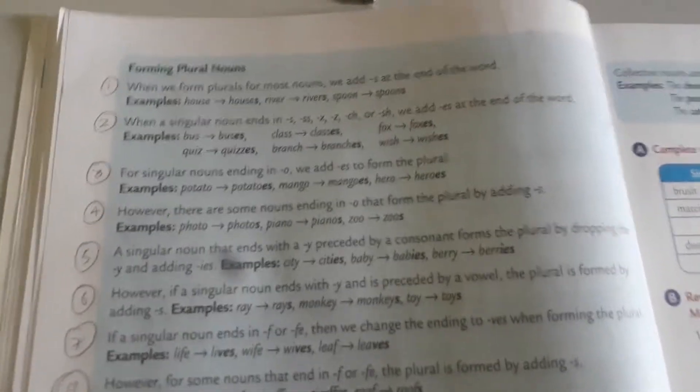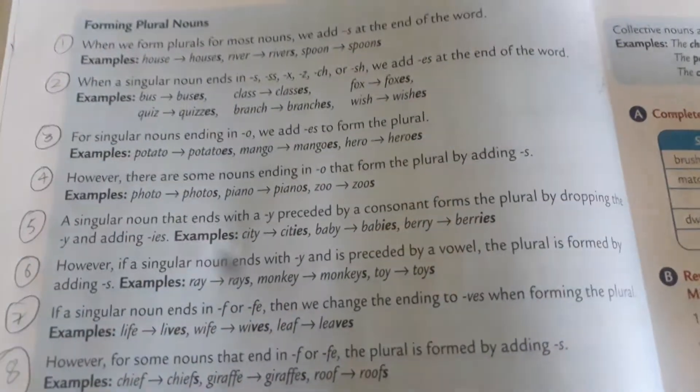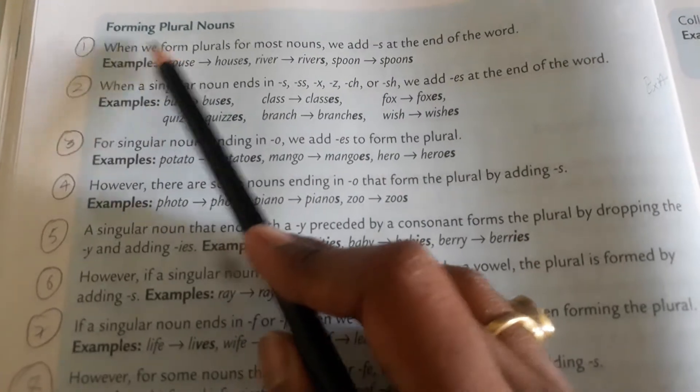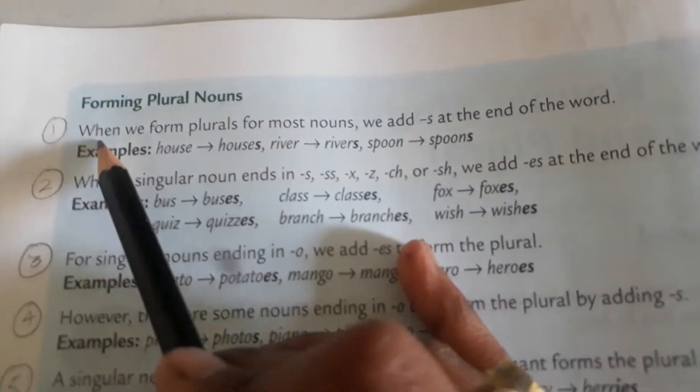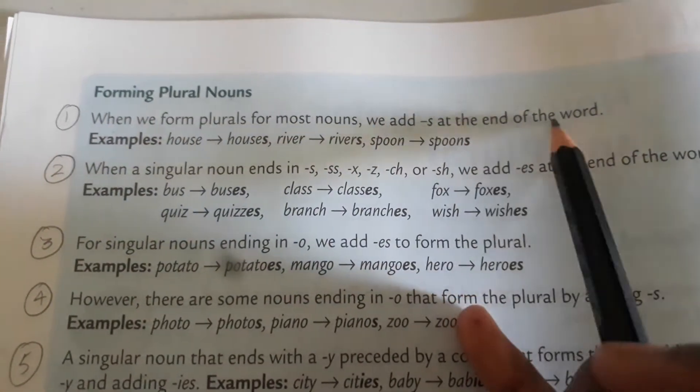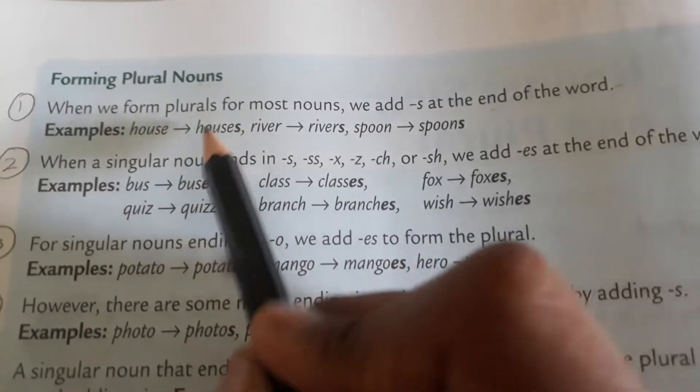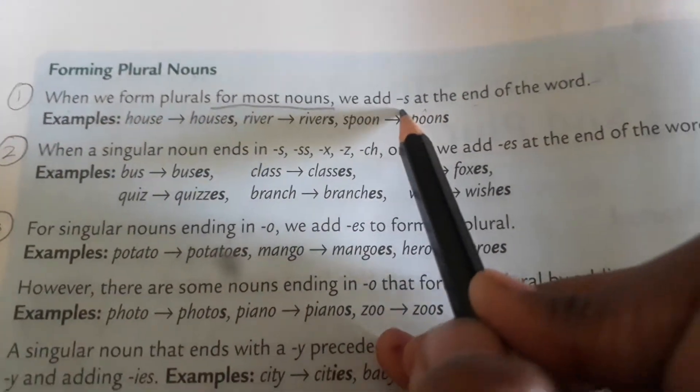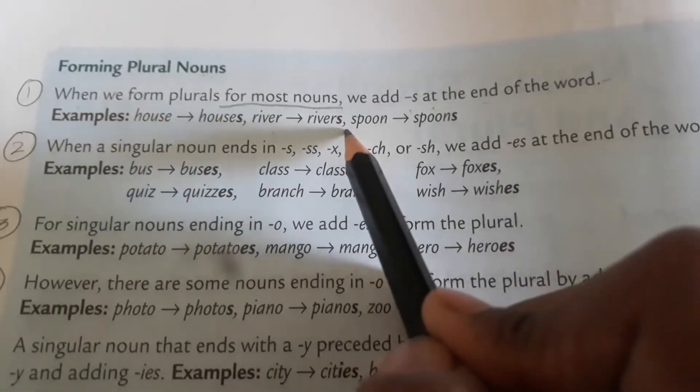Now come to page number 20. Look over here very carefully. When we form plurals for most nouns, we add S at the end of the word. We just add S. And what happens when it comes to plural form: house becomes houses, river becomes rivers.